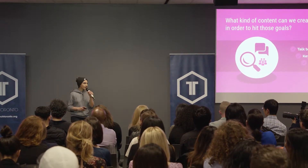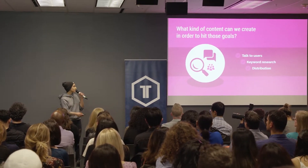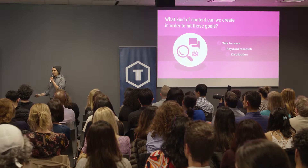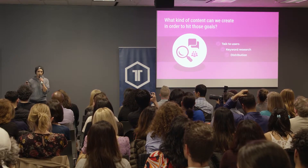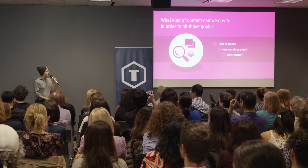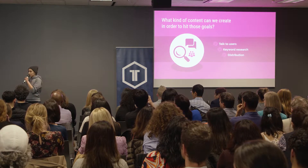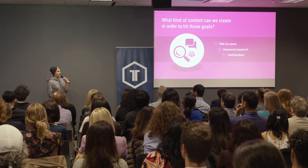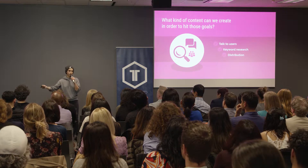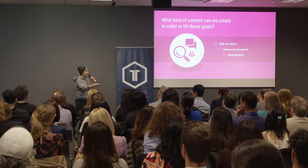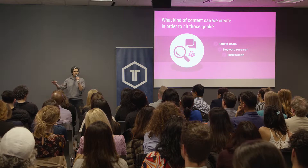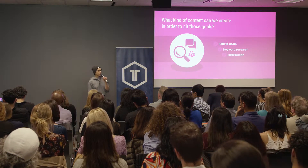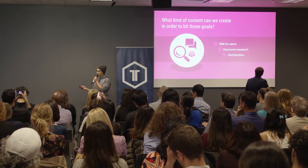Some of the things we can do to hit those goals and identify what type of content to create is to talk to our users, figure out their pain points and what they're actually trying to achieve. Another thing is keyword research — to identify what we want to be positioned for, what we want our product to be known as. And of course, distribution: how can we take that content and promote it so people can find it.